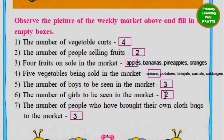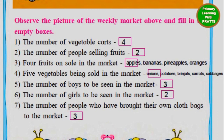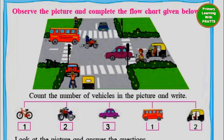The number of boys to be seen in the market — we want only boys, not men. They have asked us only boys, and the boys are three, so we write three. The number of girls in the market is two. The number of people who brought their own cloth bags to the market is three.